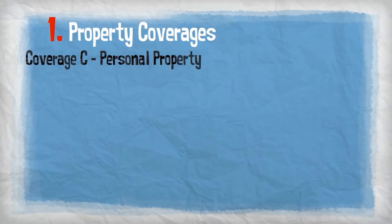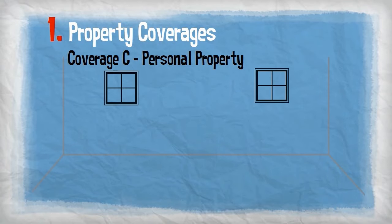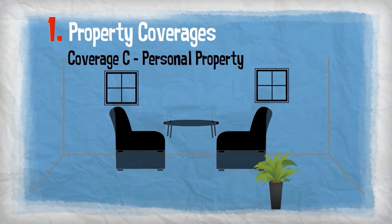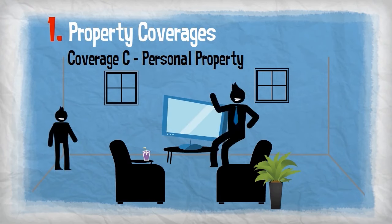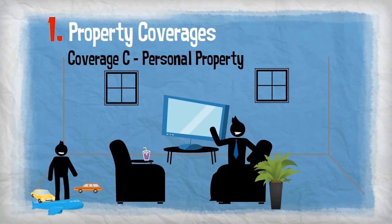Coverage C, personal property, covers the contents of your home such as furniture, appliances, clothing, and toys.